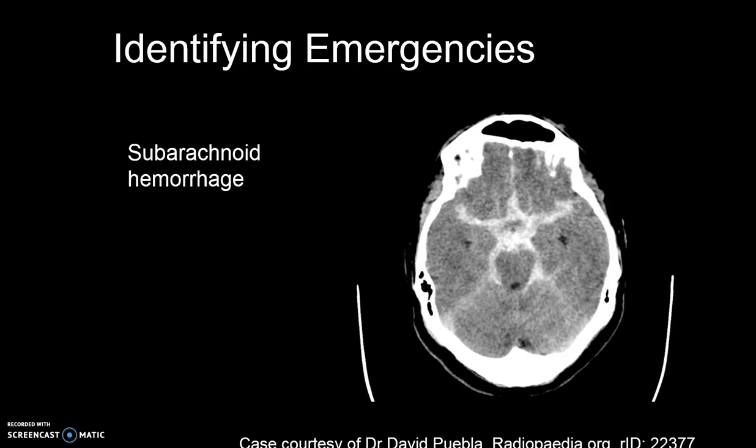There are two types of subarachnoid hemorrhages: traumatic and aneurysm. The hyperdensity around the circle of Willis is easily recognizable here. Remember, this is a neurosurgical emergency. For aneurysms that cause a subarachnoid hemorrhage, act quickly so the aneurysm can be coiled or clipped depending on the provider, age of the patient, and severity.